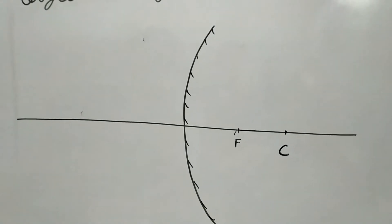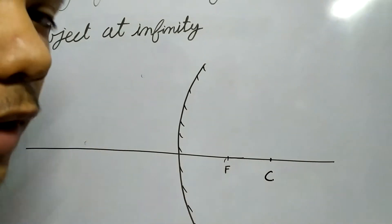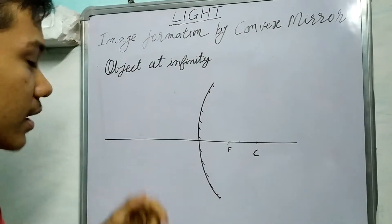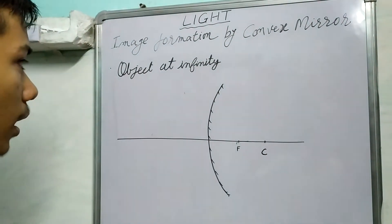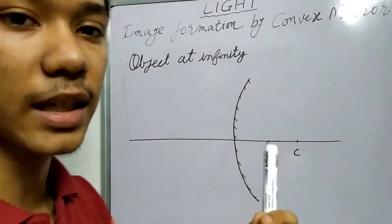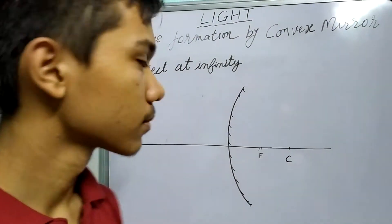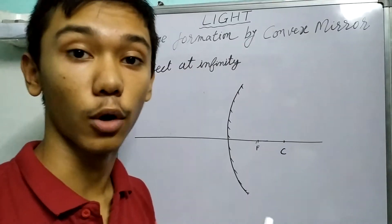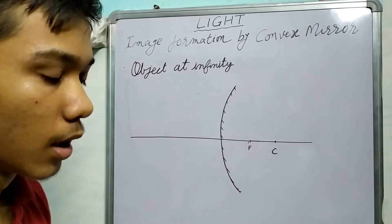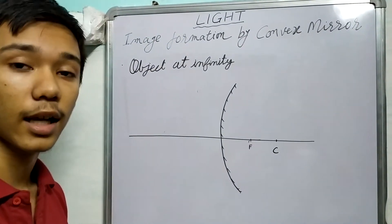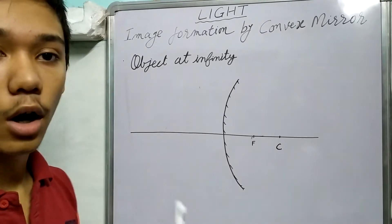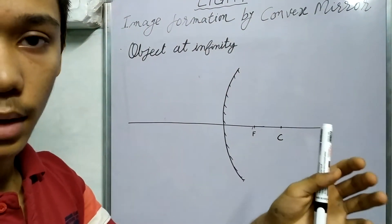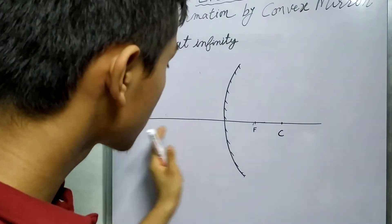It turns out that there aren't really many cases of image formation if we consider the convex mirror. The first case is if the object is very far away — we consider that to be infinity. If an object is at infinity, all the rays originating from the object will be parallel to the principal axis.